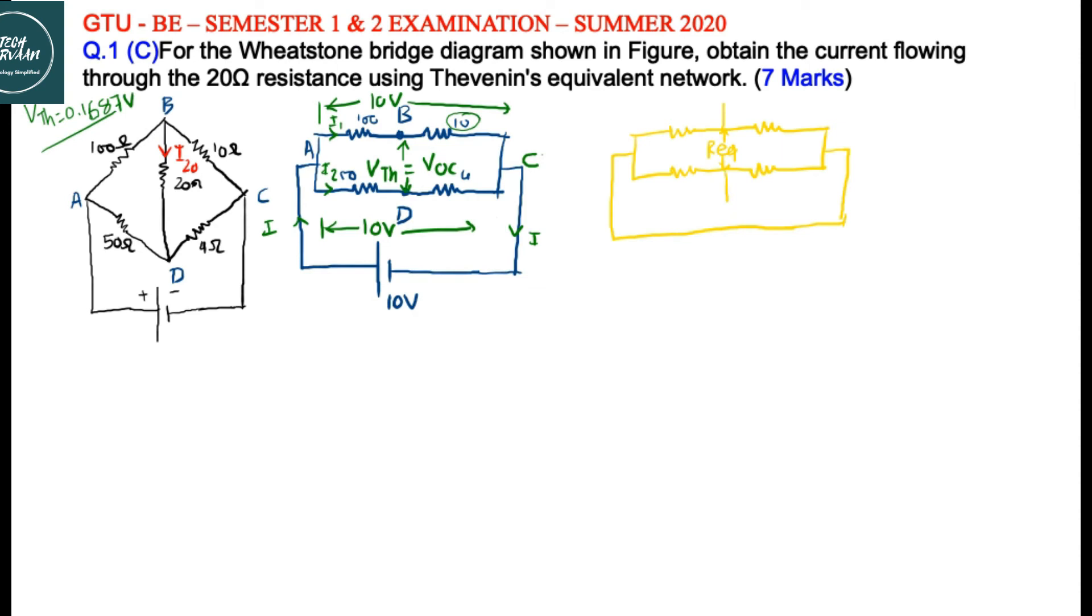We will draw it like this: 100 ohm, 10 ohm, 50 ohm and 4 ohm. This is terminal A, B, D, and C. This is our terminal B. Between B and A, 100 ohm is connected and 10 ohm is connected. Between B and C, and between C and D, 50 and 4 are connected.